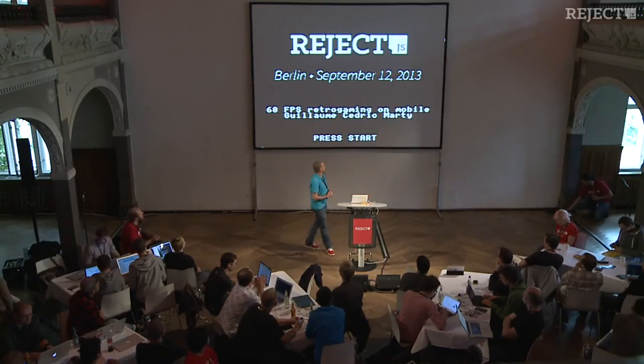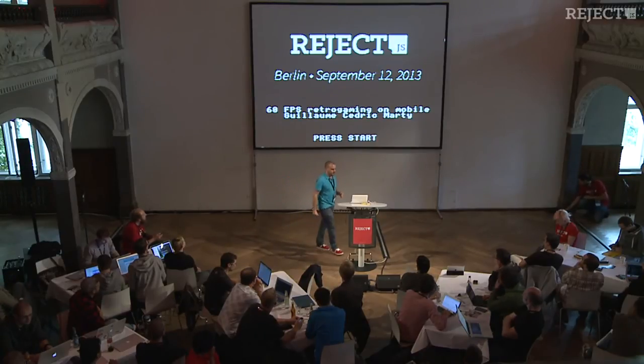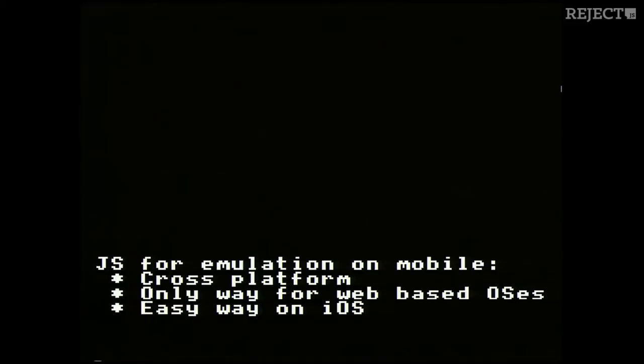The title of the talk is 60 FPS retro gaming on mobile. As you know, the current state of JavaScript is fast enough for doing emulation. It's also good because it's cross-platform, so you don't have to build different binaries depending on the platform you want to ship your emulator. And also, it's the only way to have video game emulation on web-based OSes — think of Firefox OS, for example. And it's the only legal way to get emulation on iOS, unless you jailbreak your iPhone.